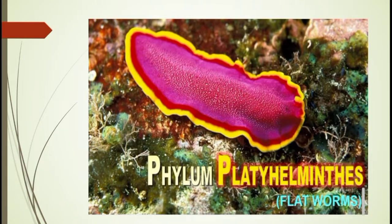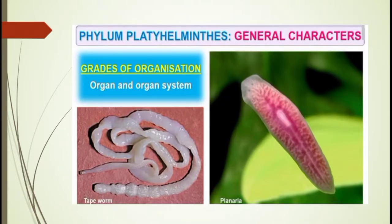Moving to the next phylum, that is Phylum Platyhelminthes. 'Platy' means flat, 'helminth' means worm — so Platyhelminthes includes flatworms. The term was coined by Gegenbauer. It is the first simplest triploblastic group of animals, includes about 12,000 species, and they have a leaf-like or ribbon-like body.